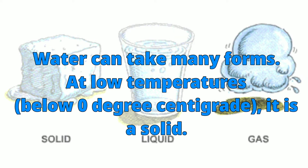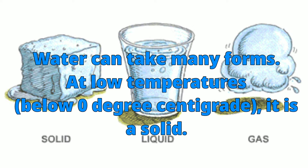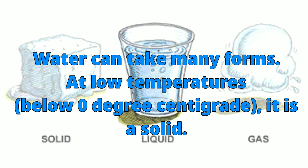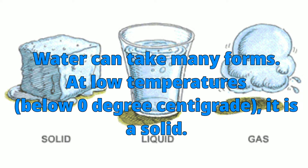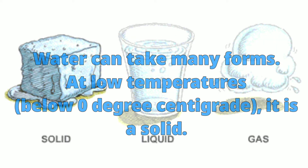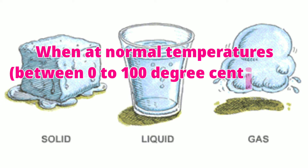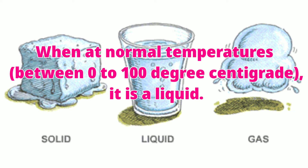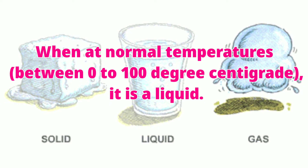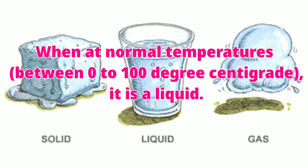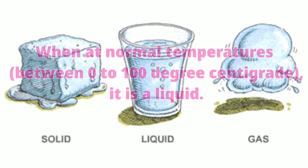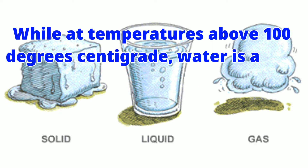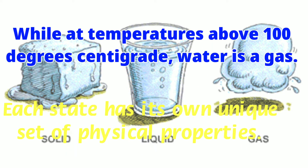Water can take many forms. At low temperatures, below 0 degrees centigrade, it is a solid. When at normal temperatures between 0 to 100 degrees centigrade, it is a liquid. While at temperatures above 100 degrees centigrade, water is a gas. Each state has its own unique set of physical properties.